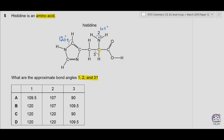For bond angle 3, carbon is making four single covalent bonds with no lone pairs. So the structure is tetrahedral and the bond angle is 109.5 degrees. Looking at the given options, we have 120 degrees for the first, 107 degrees for the second, and 109.5 degrees for the third. The correct option is therefore B.